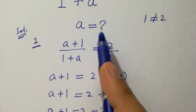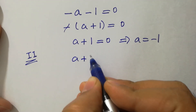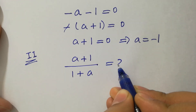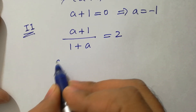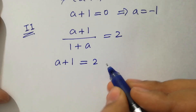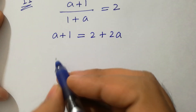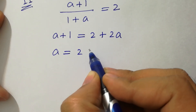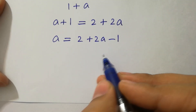For the second method, we have the question (a+1)/(1+a) = 2. Rewriting: a+1 = 2(1+a), which gives a+1 = 2 + 2a. Moving terms: a = 2 + 2a, so we have a = 2 plus 2a. Rearranging, we get a = 2a + 2 - 1.